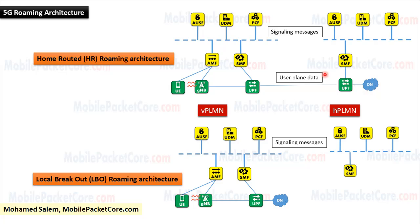To perform this, the control plane in the visited network will need to communicate with the control plane in the home network in order to exchange signaling messages. In addition, the user plane (UPF) in the visited network will need to communicate with the user plane (UPF) in the home network in order to exchange user plane data.